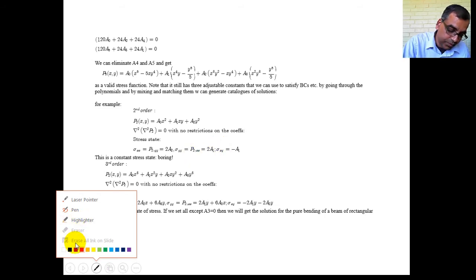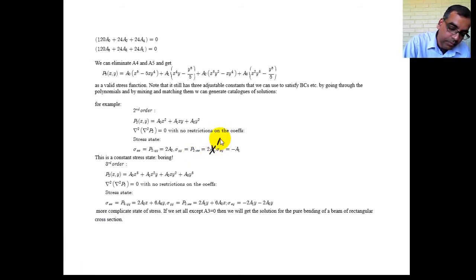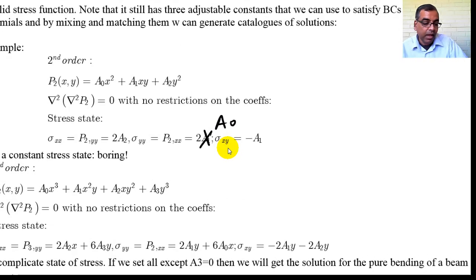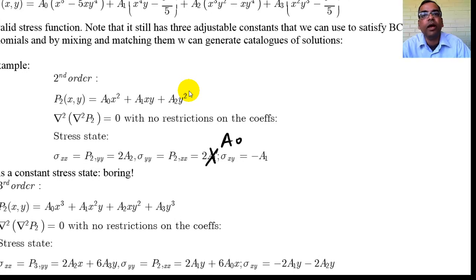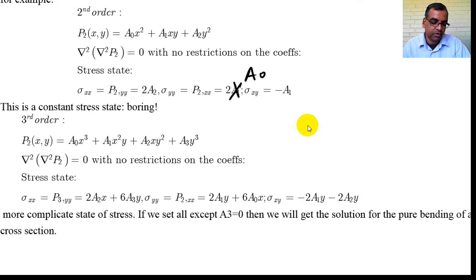That should be a_naught. So what happens is you can get any constant stress state by picking a_naught, a_1, a_2. So this is very useful for adding and subtracting constant stresses. So whenever you want to add or subtract a constant stress from something, add this Airy stress function. Very good. So there is no restriction on the coefficients.